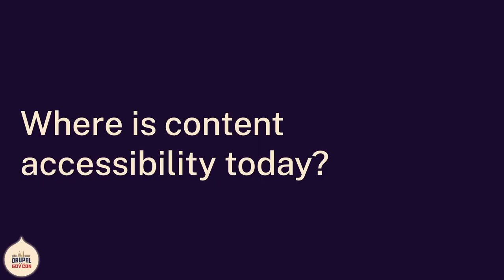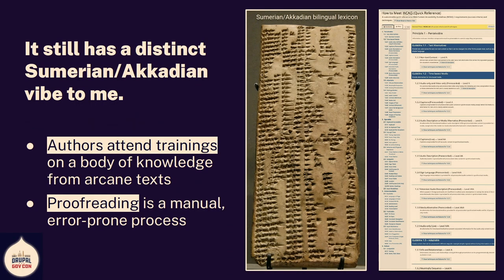So what about accessibility? You've been to a lot of talks by now — on day two — where people are teaching you all these arcane texts. I think it has a distinct Sumerian-Akkadian vibe. When I look at the WCAG Web Content Accessibility Guidelines QuickRef, it looks awfully like that. It's my job — I've mastered this body of arcane knowledge. But we're asking authors to attend a lot of trainings, learn a lot of things. Proofreading is manual, error-prone. Even if you know this, it's still error-prone.